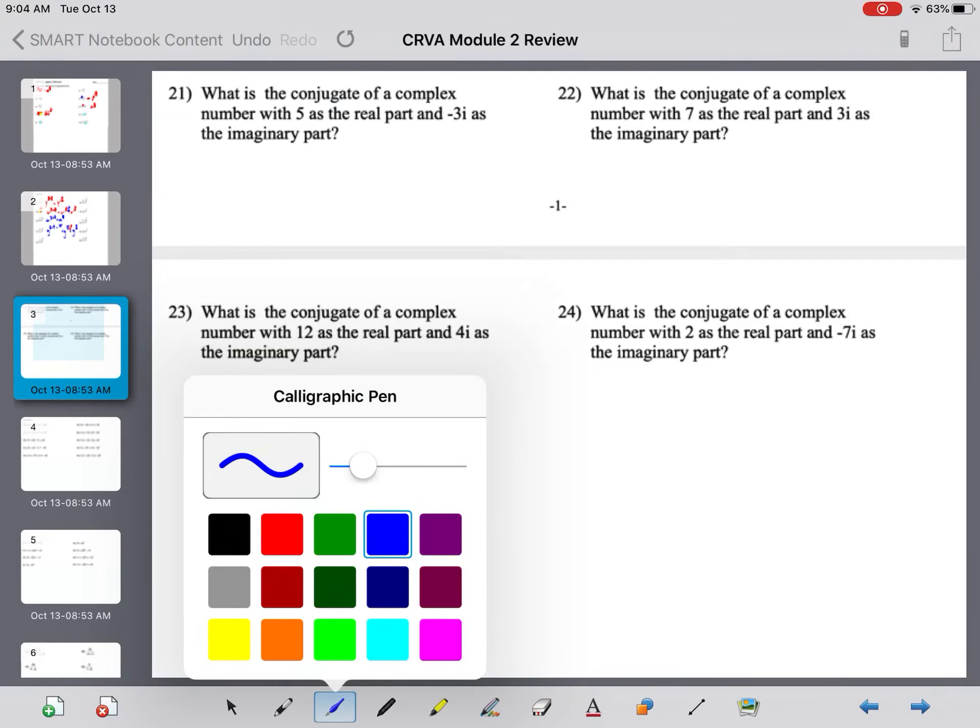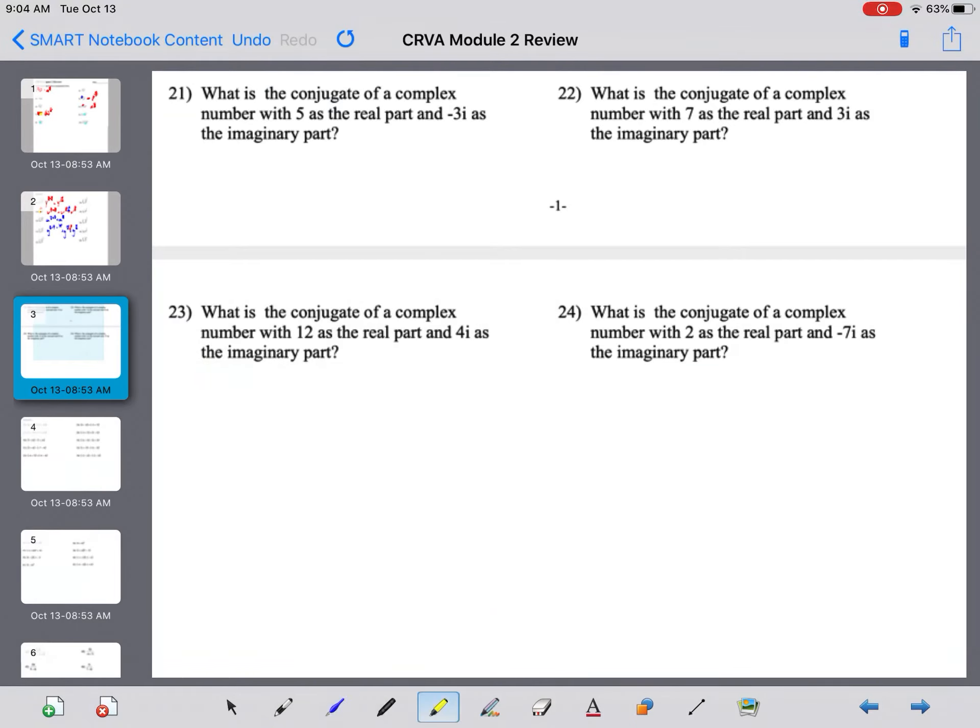All right, let's try number 21. Number 21 says, what is the conjugate of a complex number with 5 as the real part and negative 3 as the imaginary part?